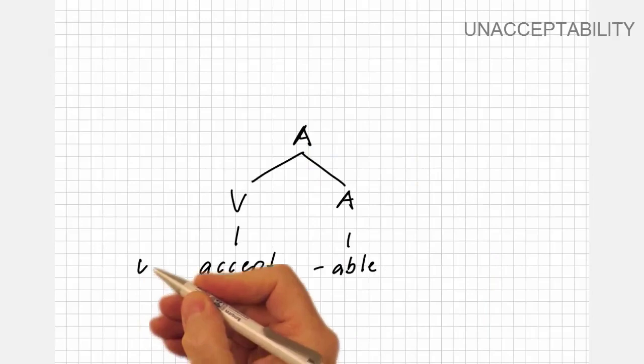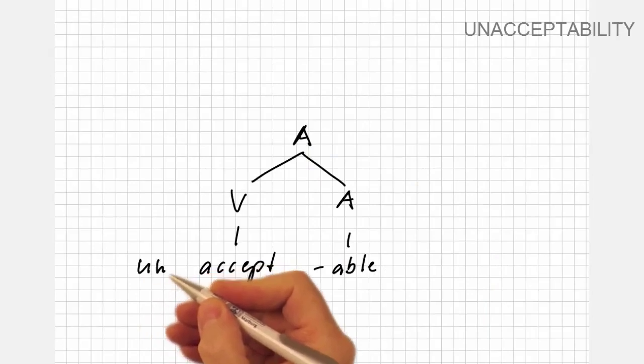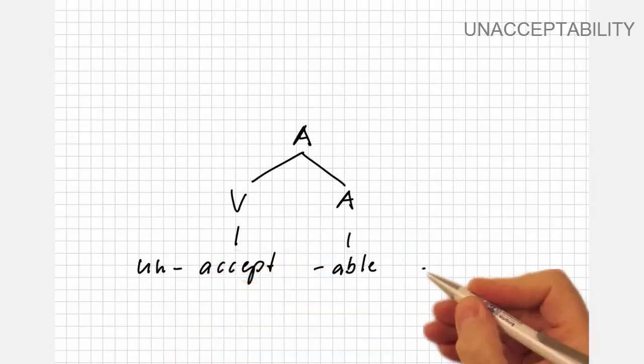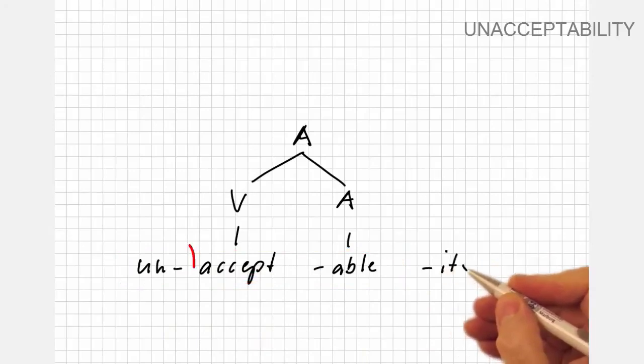Now we have two choices. Either we attach the prefix un- and get unacceptable, or we attach the suffix -ity to generate acceptability.